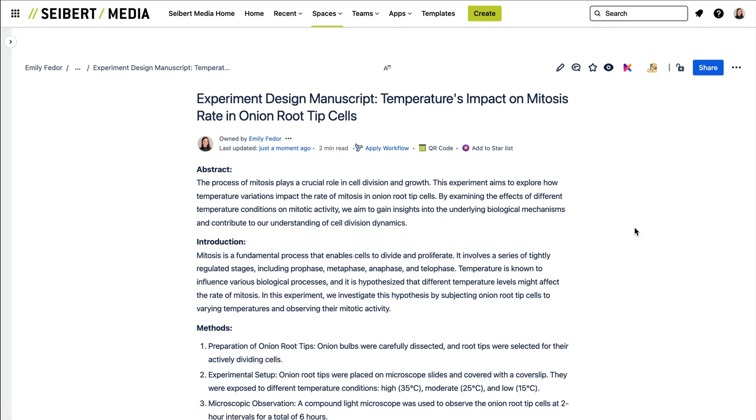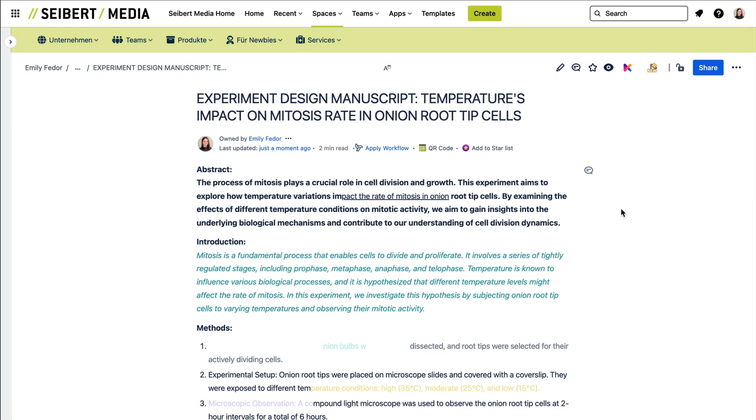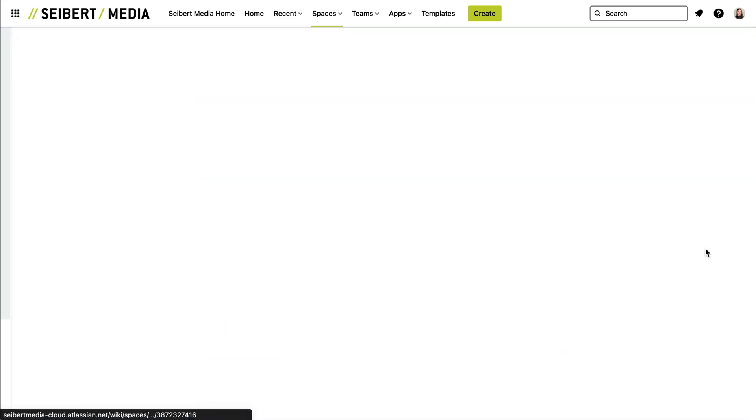That means that when someone accidentally ends up causing some types of formatting errors or accidentally erases crucial information, it's all redeemable through the revision history.